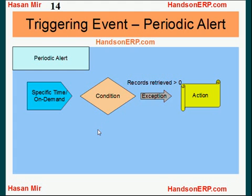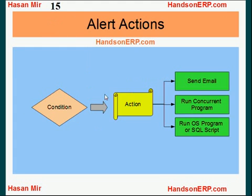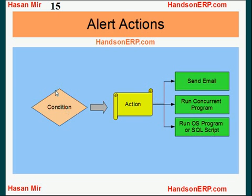The responsibility that you use is called Alert Manager. So we understand that we define a condition and specify an action — when the condition is met, the action is executed. What kind of actions can we define in Oracle Alert module? You can define your action as an email, meaning a notification will be sent out. You can define your action as running a concurrent program, meaning when the condition is met, that concurrent program will automatically be launched. You can also make Oracle run an operating system program or an SQL script when the condition is met.